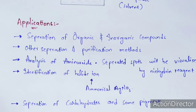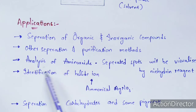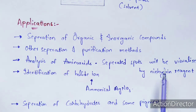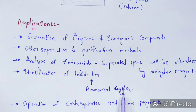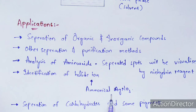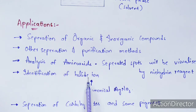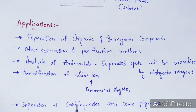Applications of paper chromatography include: separation of organic and inorganic compounds, purification methods, analysis of amino acids (visualized using ninhydrin reagent), identification of halide ions using ammoniacal silver nitrate (AgNO3) as a visualizing agent, and separation of carbohydrates and pigments.